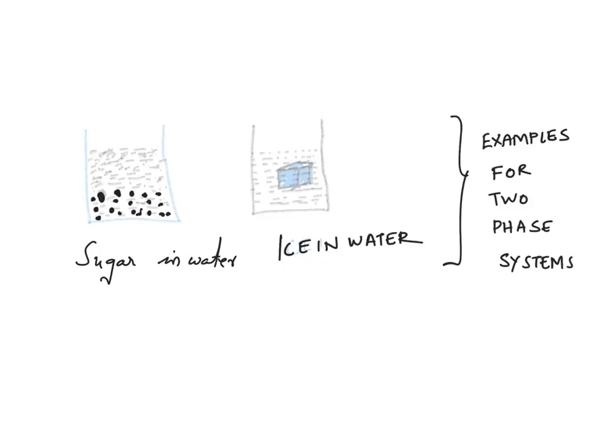That's why we call it a two-phase system. Now let's move to the second example: ice and water.